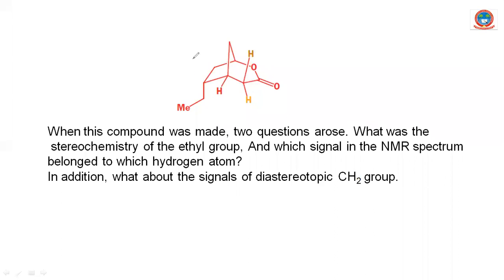So we have two questions: first, orientation of the ethyl group — is it endo or exo? Second, the correlation of proton signals — this proton, that proton, and one more proton — how do we correlate their signals? The approach is to irradiate the CH₂ protons of the ethyl group, which are diastereotopic. We need to determine the geometry and orientation of this proton and the stereochemistry of this proton.